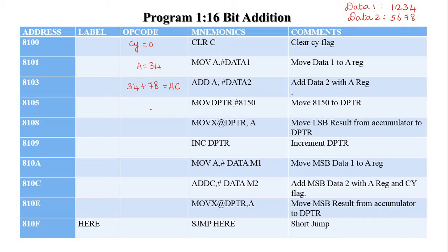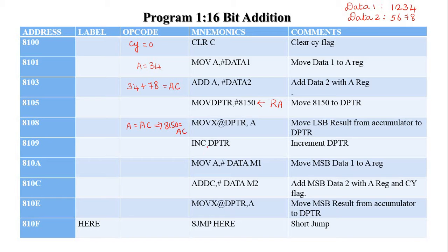The next instruction moves DPTR to 8150H, which is the result address. So this result address is loaded into the data pointer. The next instruction MOVX at DPTR, A stores the accumulator content (ACH) into memory location 8150H. Then we increment the data pointer to 8151H.